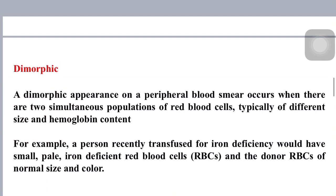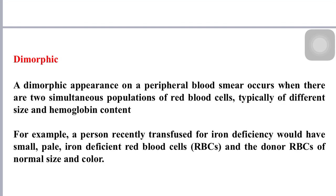Another type is dimorphic anemia. A dimorphic appearance on a peripheral blood smear occurs when there are two simultaneous populations of red blood cells, typically of different size and hemoglobin content. For example, a person recently transfused for iron deficiency would have small, pale iron-deficiency red blood cells alongside donor cells of normal size and color — this is the dimorphic condition.